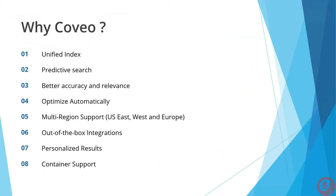Why use Coveo? Beyond unified index, predictive search is very important — most clients are interested in an automatic dropdown populated with search results or query terms as you type. Better accuracy and relevance: when you search and click specific results, relevance is automatically tuned, not manually. You can set optimization periods like three or six months — the default is three months. It also supports multi-region, which came through a couple of years ago, mainly to support EU data residency requirements.